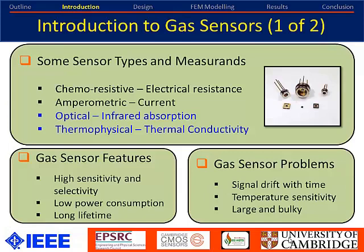The list of sensor types is by no means limited — I'm just showing a few here. For example, in a chemoresistive sensor you're looking at electrical resistance change, whereas in a parametric one you're looking at current changes. Optical sensors can include infrared absorption, and thermal-physical sensors can include thermal conductivity, which is what we are presenting here.